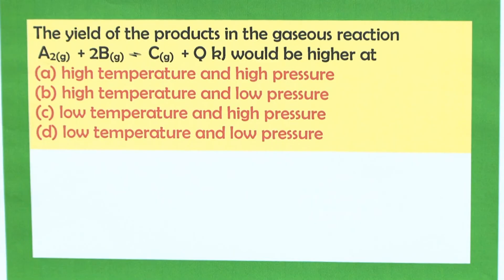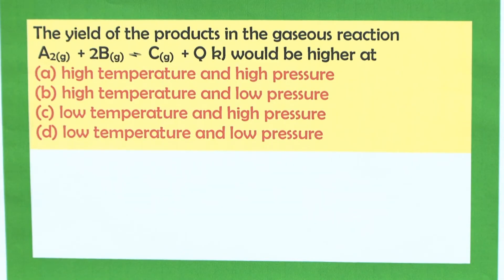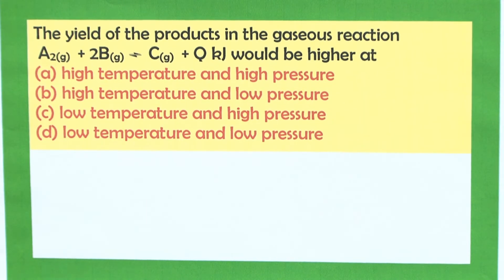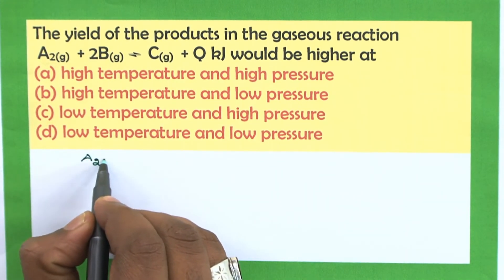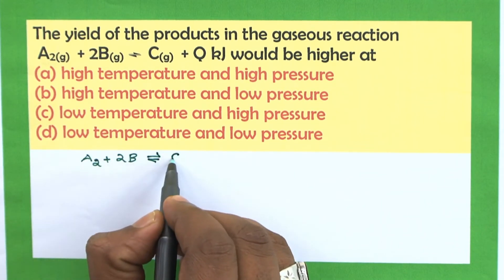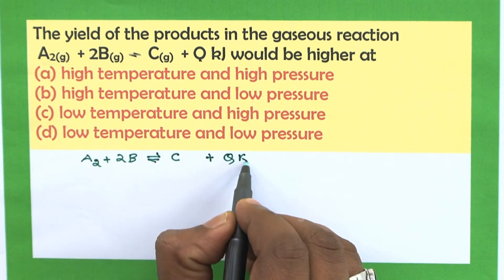Friends, let us discuss the next question. The question: 'The yield of products in the gaseous reaction A₂ + 2B ⇌ C + q kilojoules of energy is liberated would be higher at — option A: high temperature and high pressure; option B: high temperature, low pressure; option C: low temperature and high pressure; option D: low temperature and low pressure.' This problem can be solved by Le Chatelier's principle.